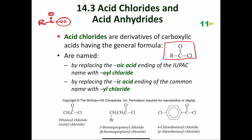How do we name acid chlorides? If you know how to name a carboxylic acid, naming an acid chloride isn't too much of a stretch. You need to know how to name them using IUPAC rules and using common nomenclature as well. Using IUPAC nomenclature, you would name the carboxylic acid and then replace 'oic acid' with 'oyl chloride.'